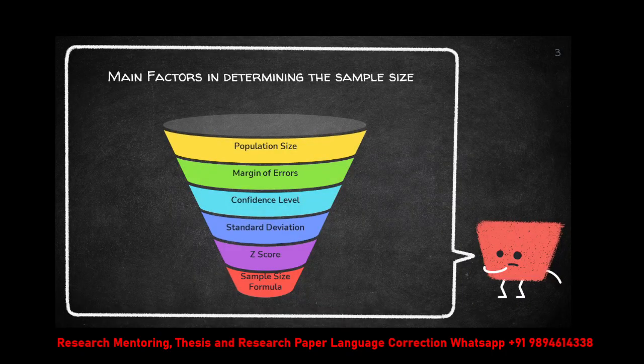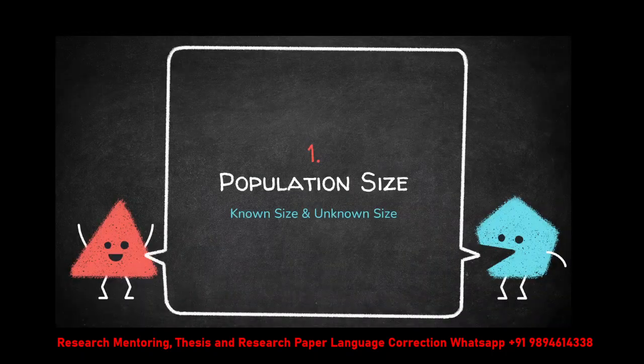These are the factors you need to keep in mind when you decide the sample: population size, margin of errors, confidence level, standard deviation, Z-score, and sample size formulae. All these things are the main factors you need to keep in mind while deciding the sample size. Let us see them one by one.